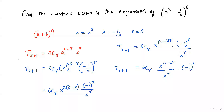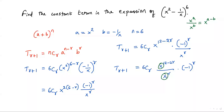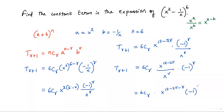We know the rule of exponents: when dividing two terms with the same base — x to the ath power divided by x to the bth power — we keep the base and subtract the exponents. Applying this here, since the base is x in both cases, we get 6Cr times x to the power (12 minus 2r minus r), times negative 1 to the power r.